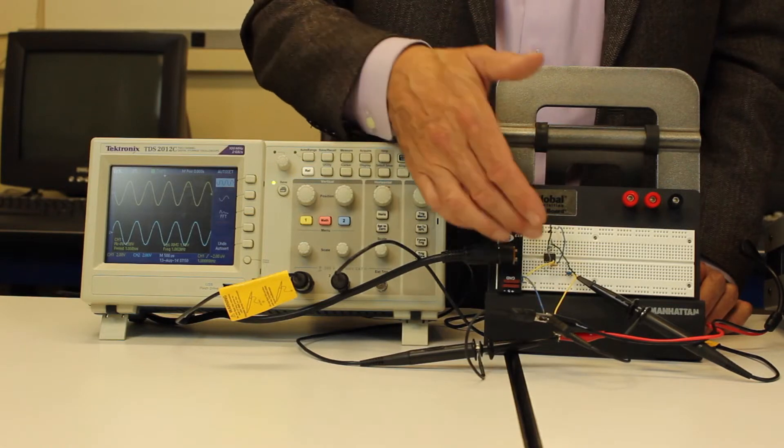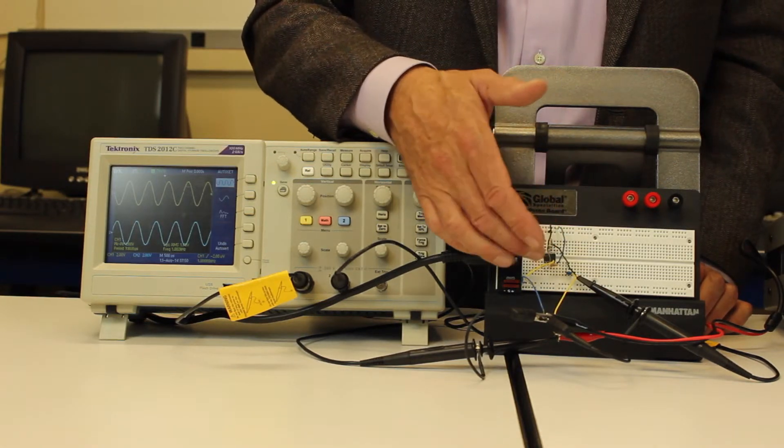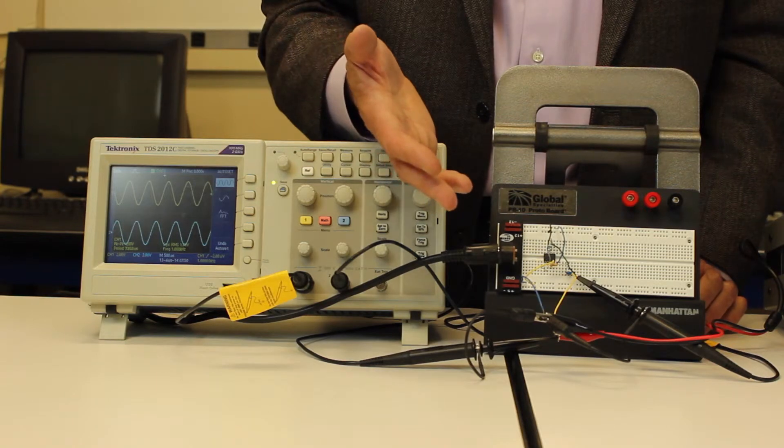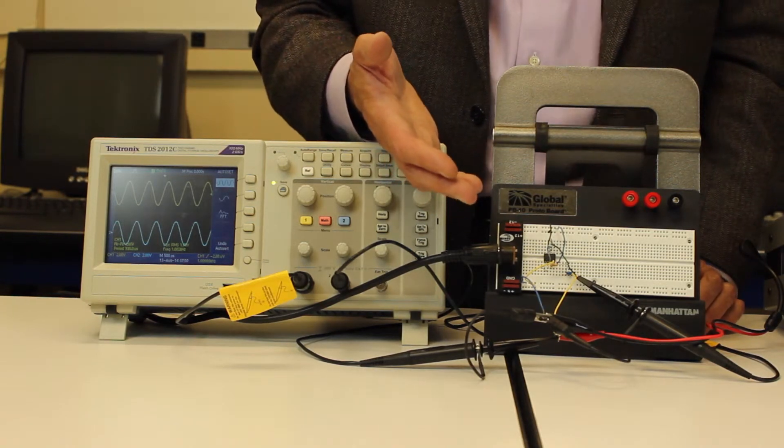We expect to have some gain that's one or bigger than one for low frequencies, and we get above the characteristic frequency, the gain will start to fall off.